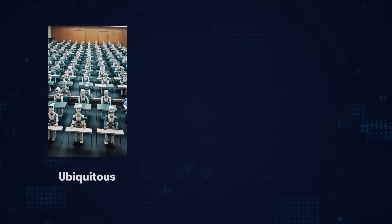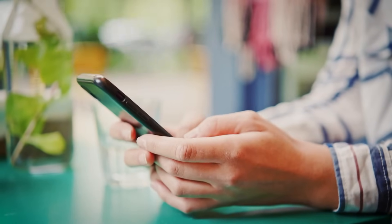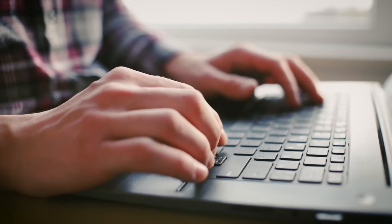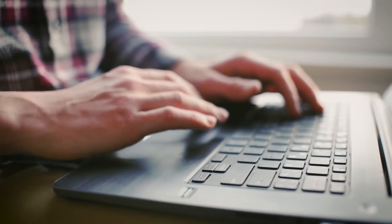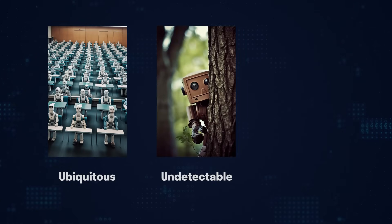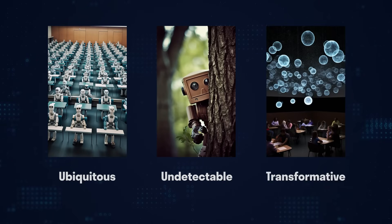Before we get started, here are a few things you should know. First, AI is everywhere. Everyone has access to the most powerful AI model in the world, and students are using it in all kinds of ways, including to cheat. And we just can't tell if they're doing so. AI is undetectable and continues to be so. AI is our first general purpose technology since the internet, and it touches everything we do. It transforms how we live, how we work, and how we teach.